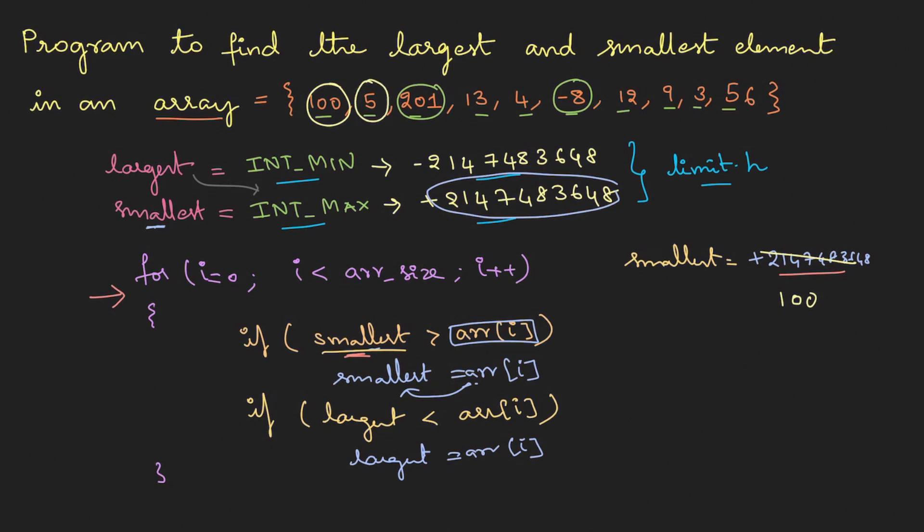Then we move to the next element, 5. 5 is less than the new smaller value, so it will be updated to 5. Then we go to 201, it is not small so there is no change. Then we go to 13, no change. 4, yes, we want to update. Then -8, yes this is smaller. Then 12, 9, 3, 26. So at the end of this loop we have the lowest value -8.